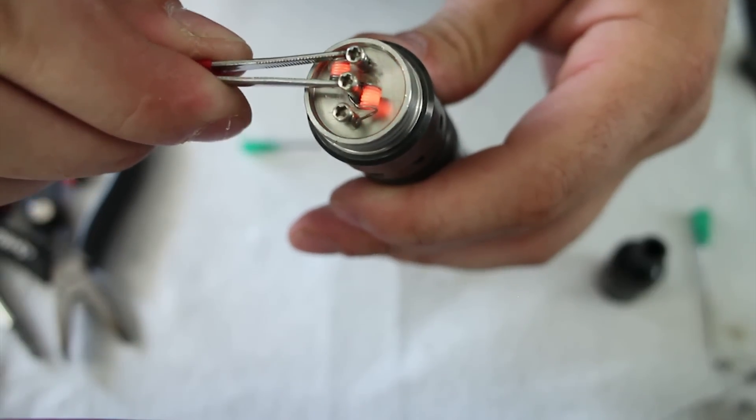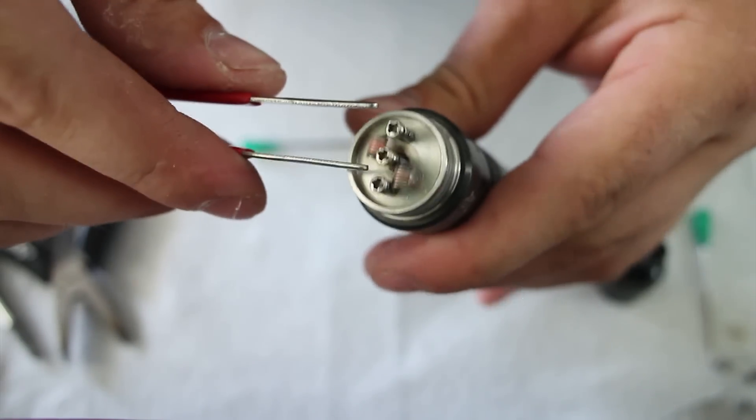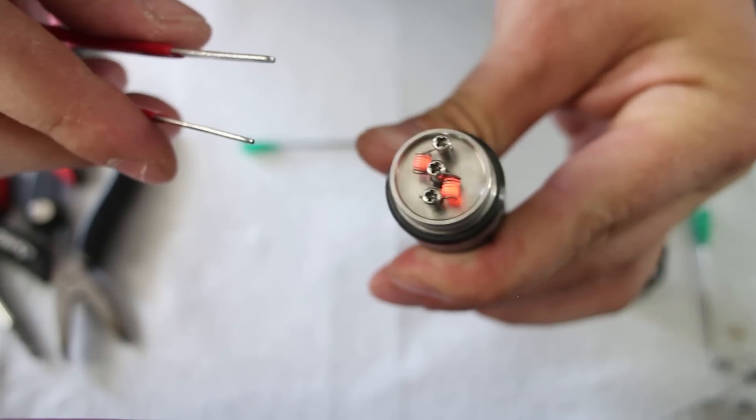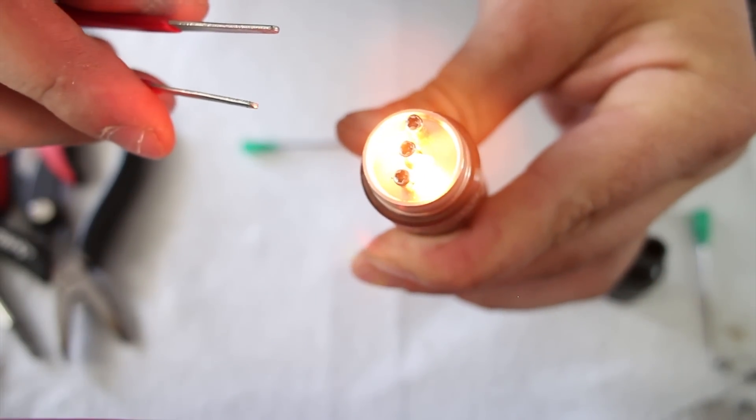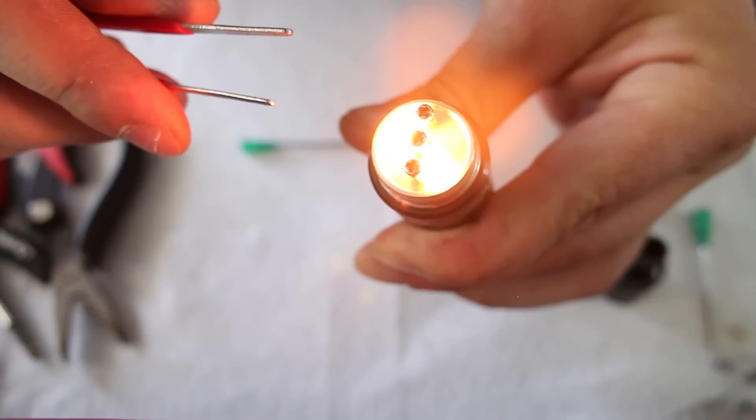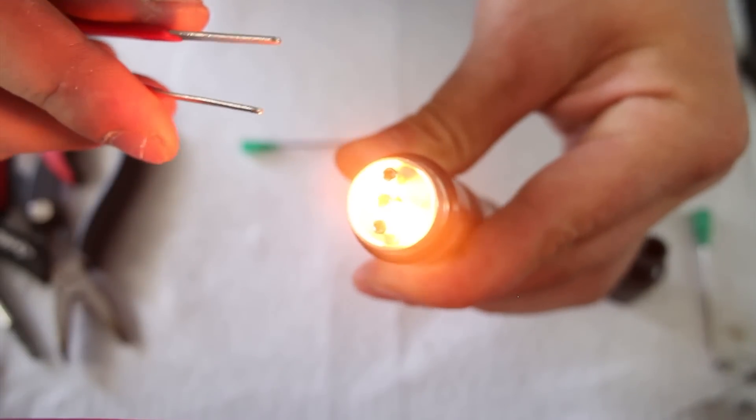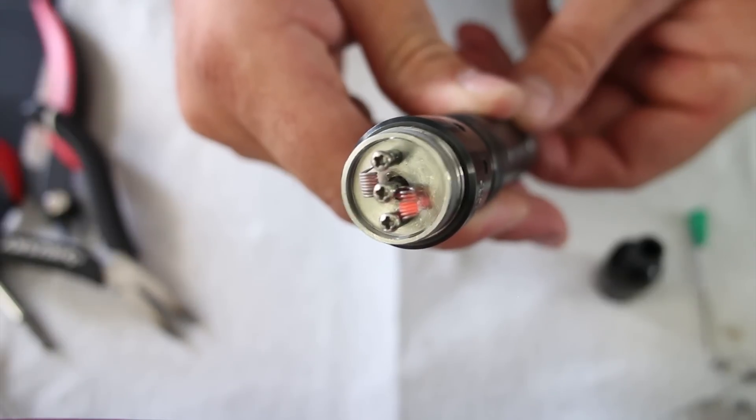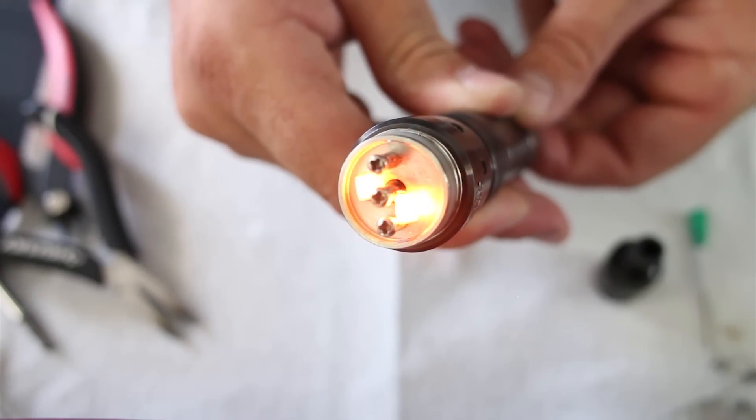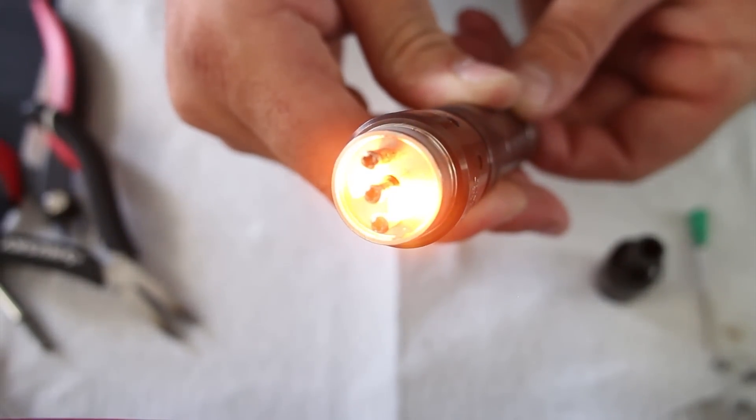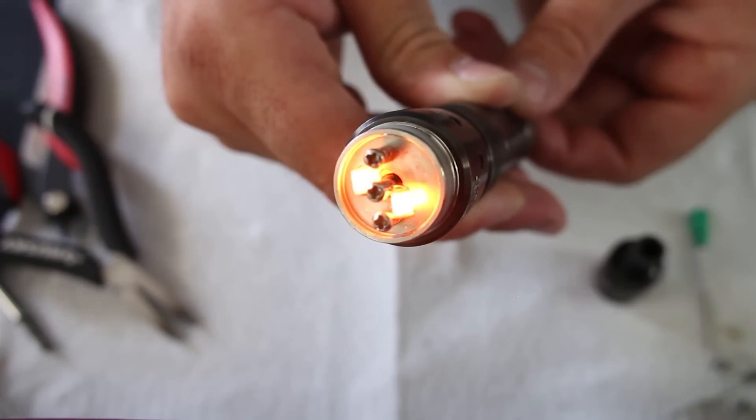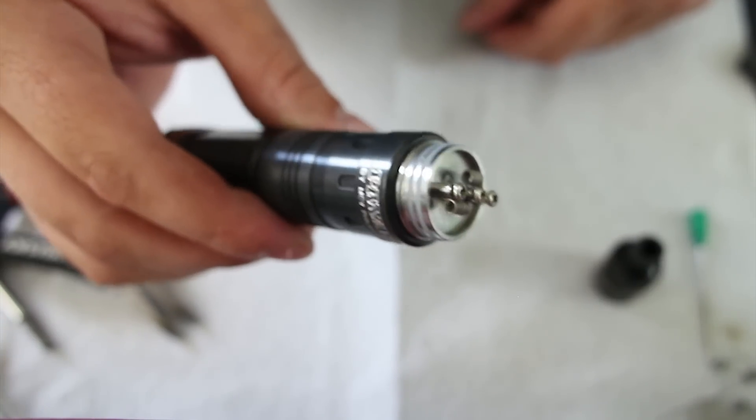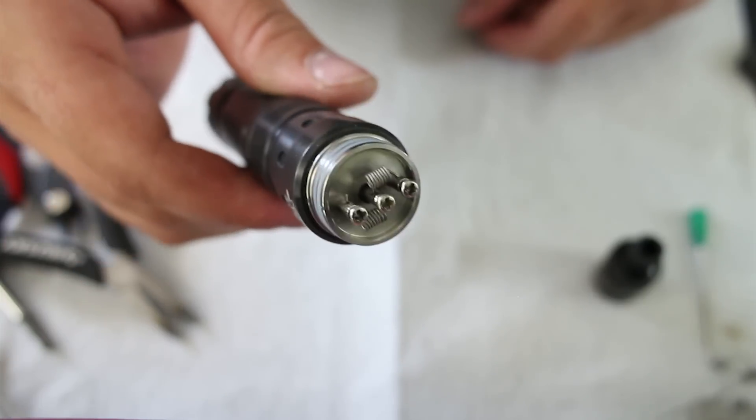Squish up your coils a little bit when they're hot, just make sure you're not firing the button at the time. Alright, we're looking pretty good. So let's wick it, juice it up, and see how it vapes.